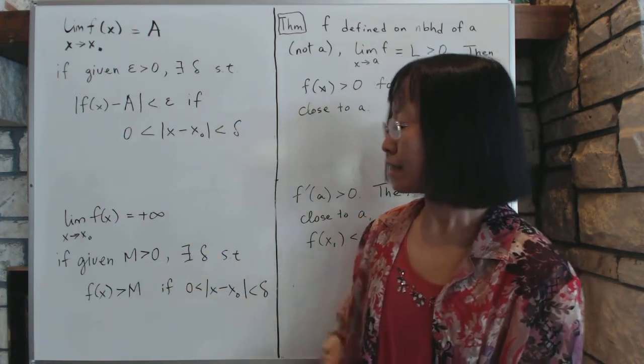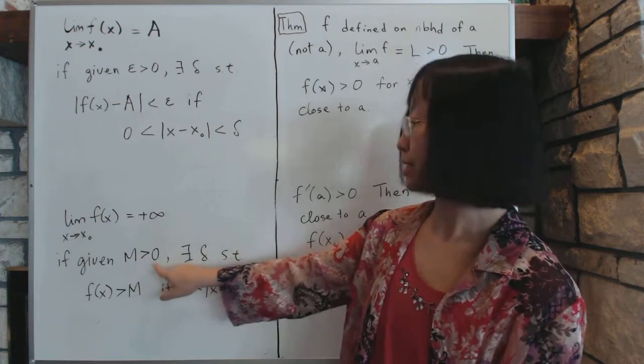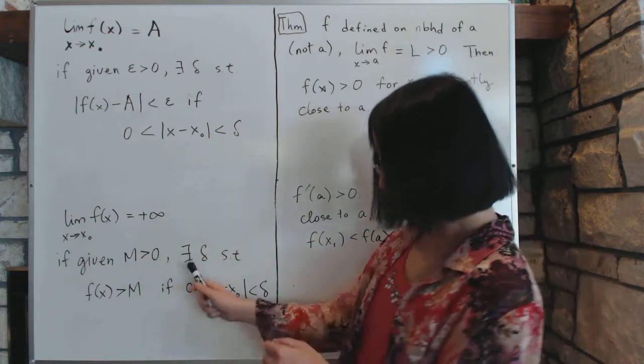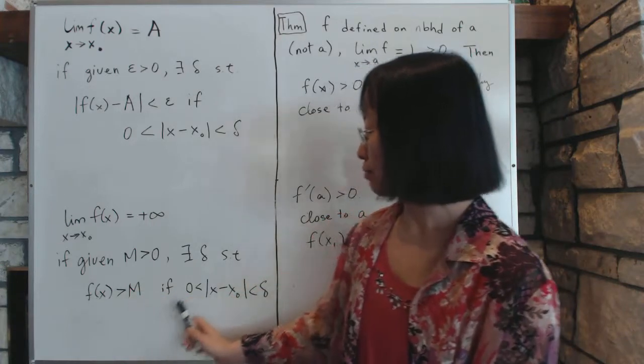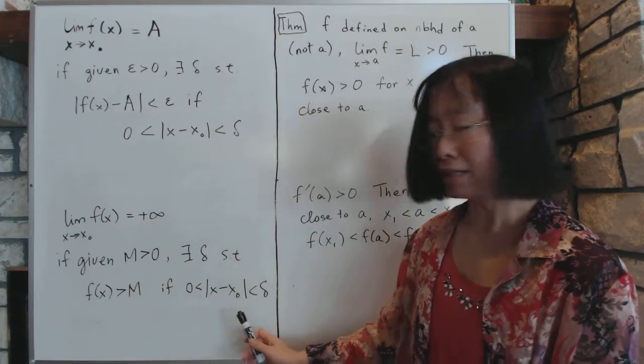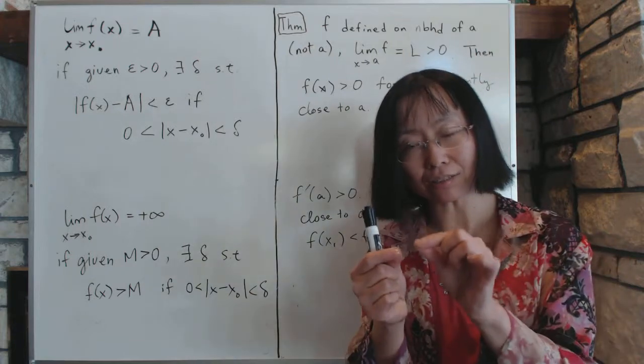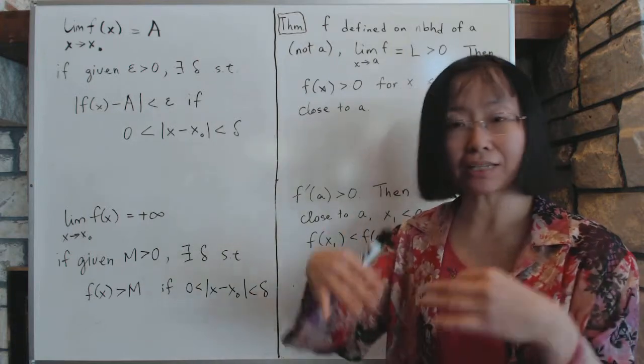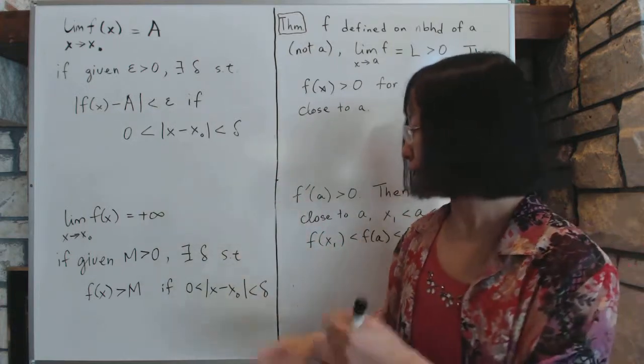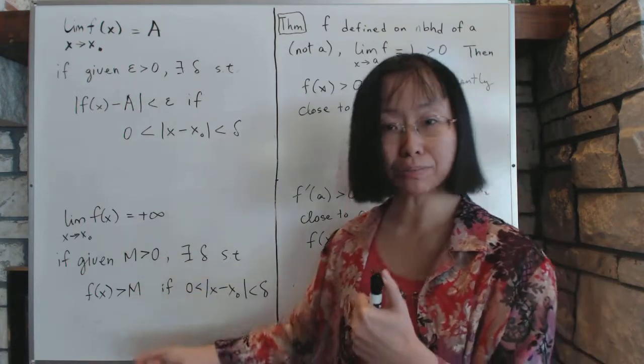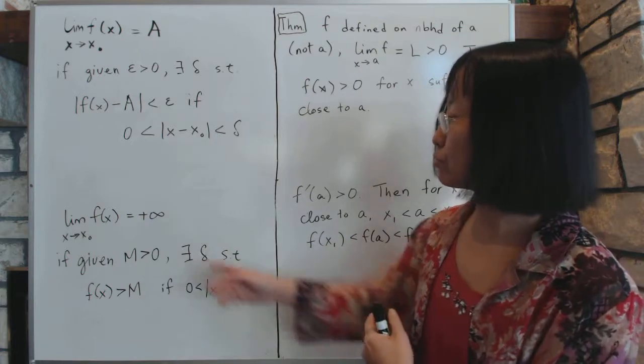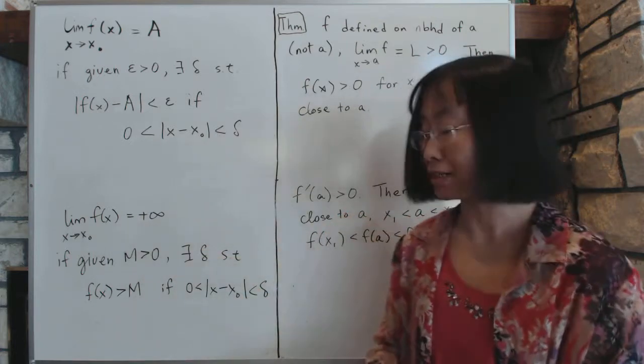That is, given a large number M bigger than 0, there exists a delta such that f(x) will be bigger than M if x is within delta of x0. As x gets closer and closer to x0, f just gets bigger and bigger. Again, no matter how big you pick a number, f will always be bigger than that. When that happens, we say the function f is approaching positive infinity.